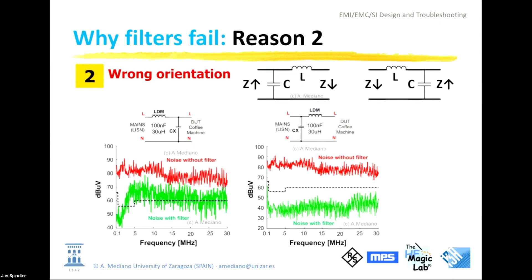If the result is the opposite, it means the output impedance of your product is higher than the input impedance of the LISN. In EMI, because we don't know the terminal impedances, filters are not symmetrical. For RF people, filters are symmetrical because they always work with 50 ohms. In EMI, this is not possible to know — it's very complicated to measure the output impedance of your product across this frequency range.